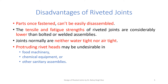Disadvantages of riveted joints: parts once fastened cannot be easily disassembled. The tensile and fatigue strength of riveted joints are considerably lower than bolted or welded assemblies. Joints normally are neither watertight nor airtight. Protruding rivet heads may be undesirable in food machinery, chemical equipment, or other sanitary assemblies.